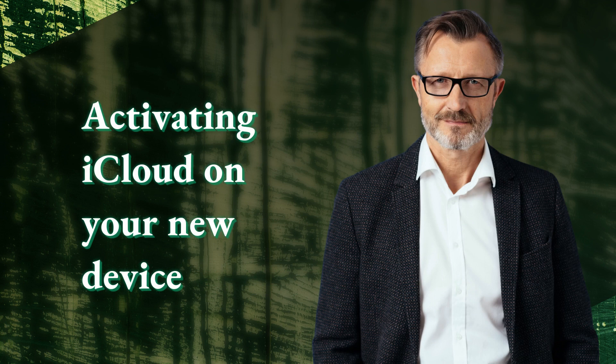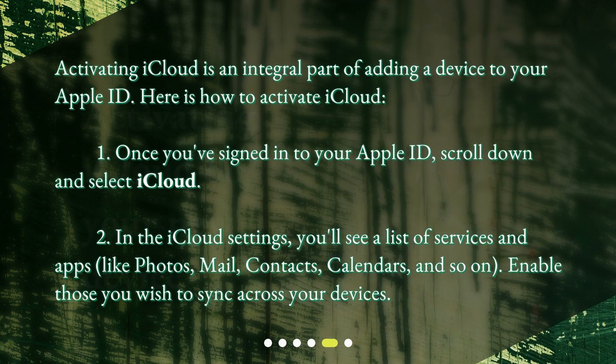Activating iCloud on your new device. Activating iCloud is an integral part of adding a device to your Apple ID. Here is how to activate iCloud: 1. Once you've signed in to your Apple ID, scroll down and select iCloud. 2. In the iCloud settings, you'll see a list of services and apps, like photos, mail, contacts, calendars, and so on. Enable those you wish to sync across your devices.